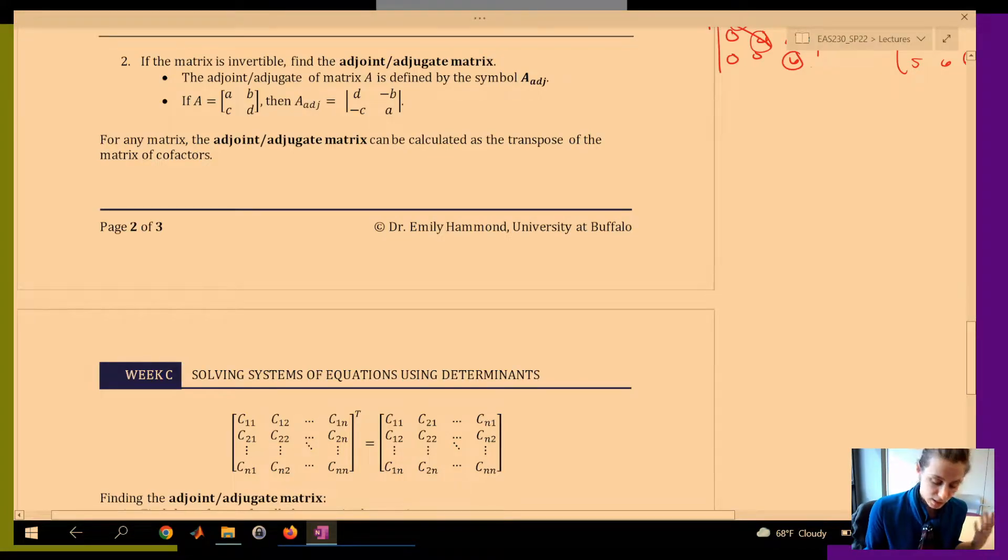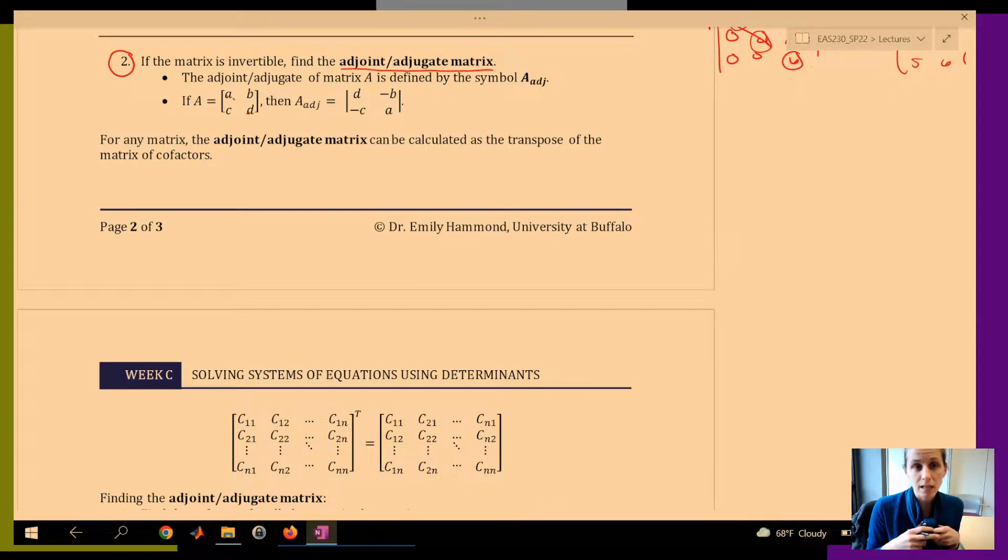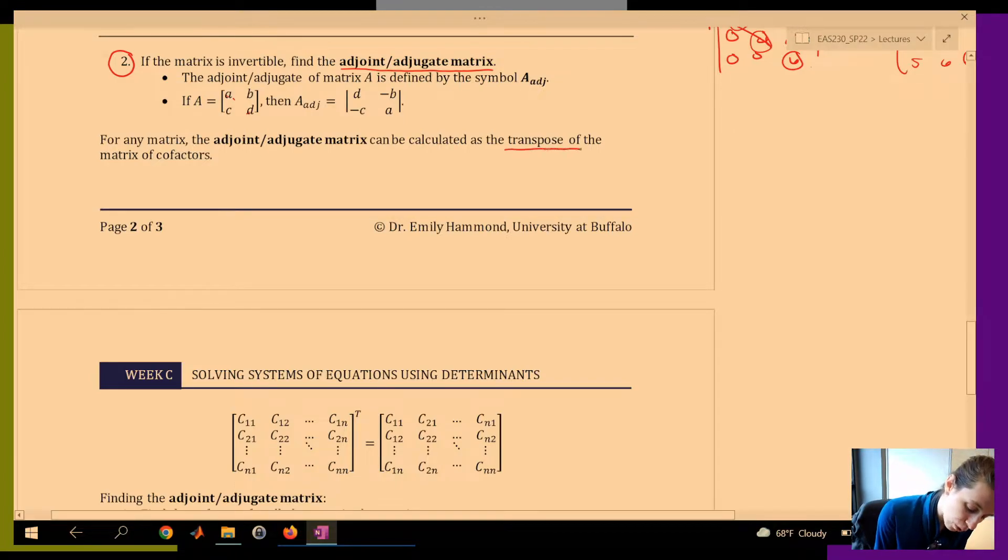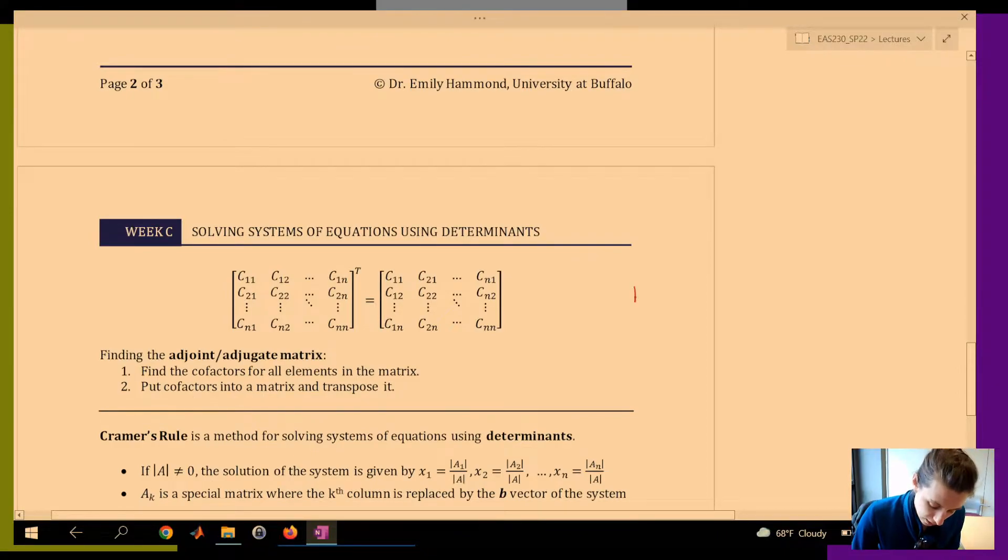So after we find the determinant of a matrix, the second thing we're going to do in order to find the inverse is to find the adjoint matrix. For a 2 by 2, we just swap A and D, and then C and B change places. For anything bigger than a 2 by 2, the adjoint matrix is calculated as the transpose of the matrix of cofactors.